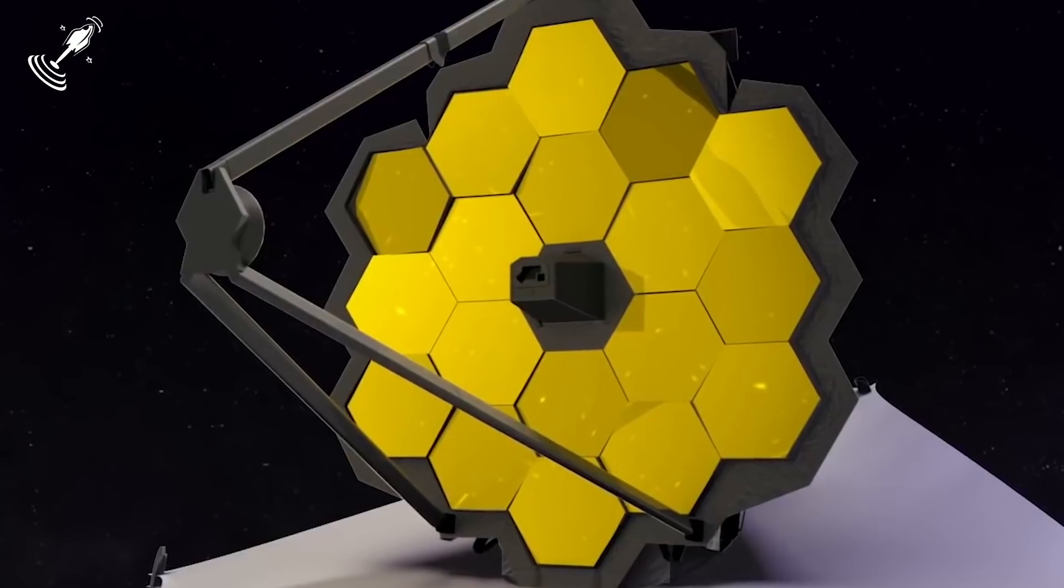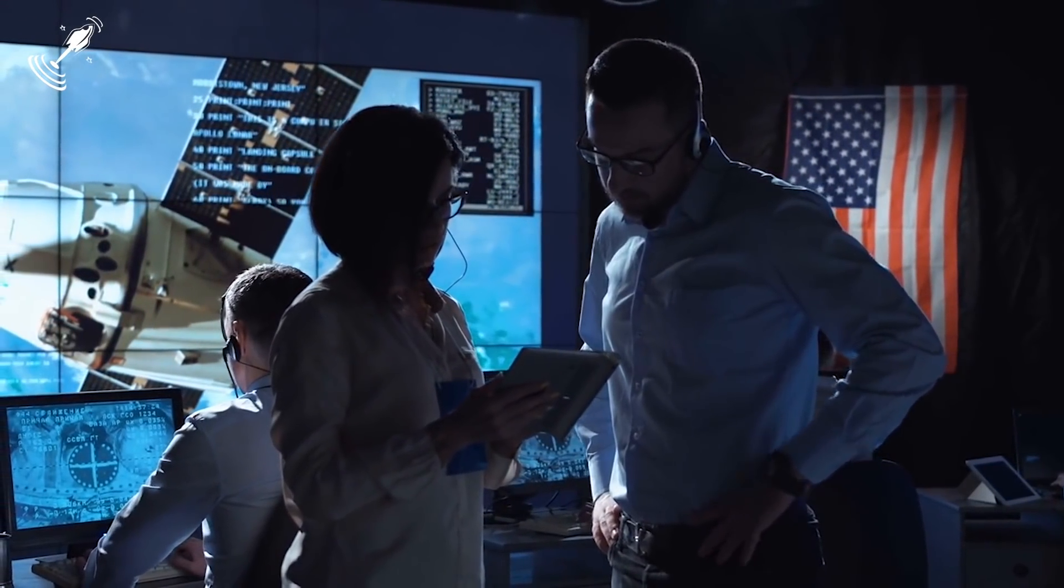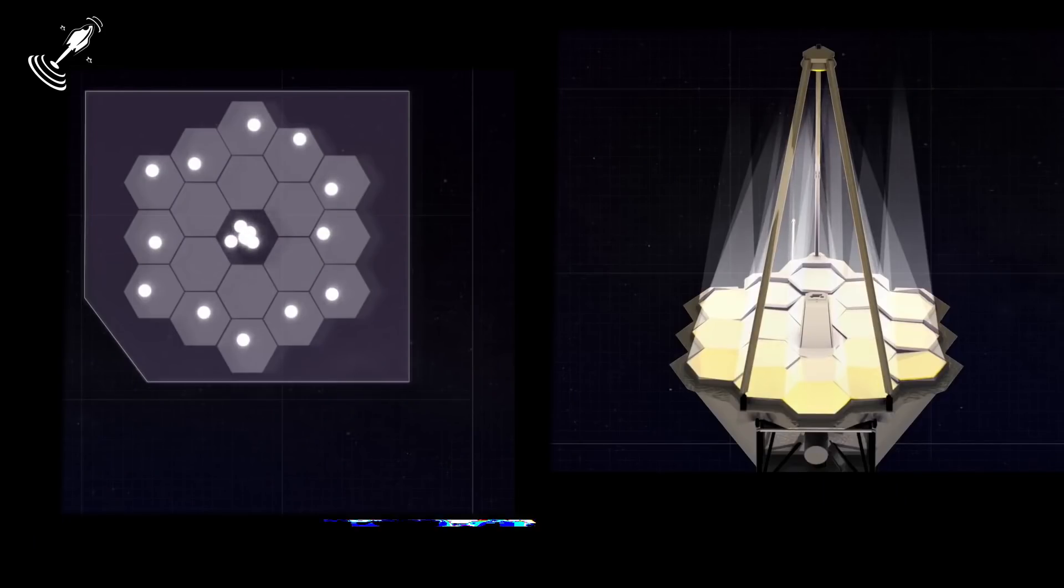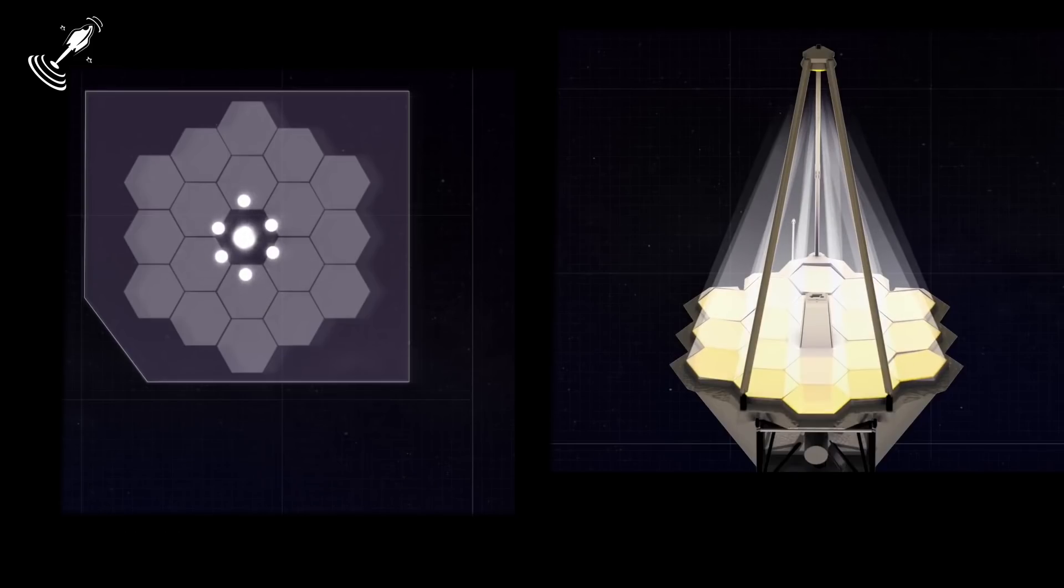Over the next five months of this journey, the team behind the telescope will be working on two main things. The first important task will be the alignment of the 18 mirror segments that make up the primary mirror. Such alignment will take at least three months.